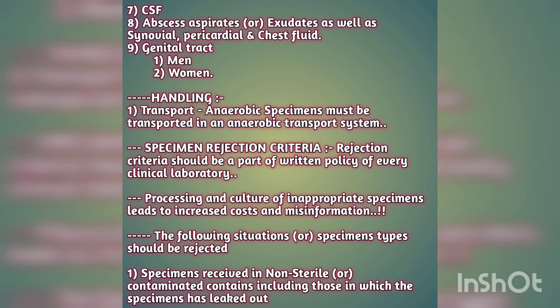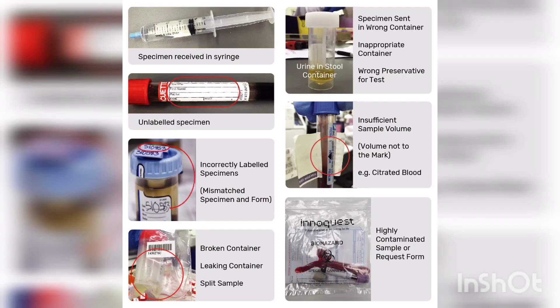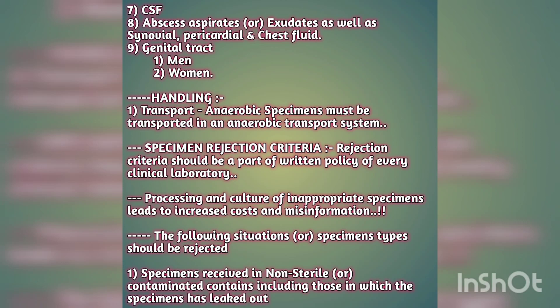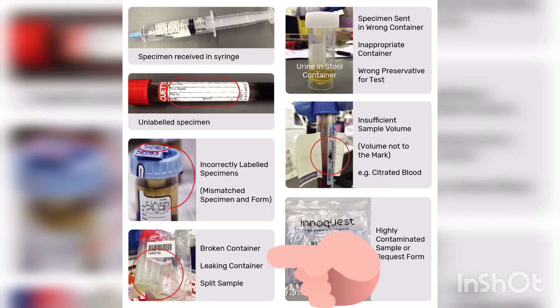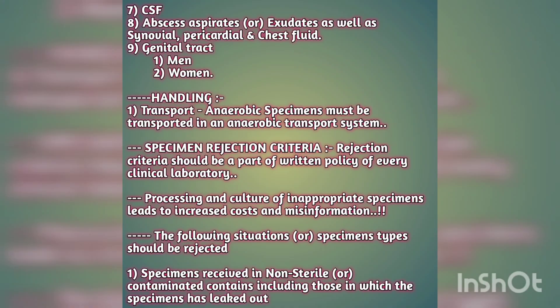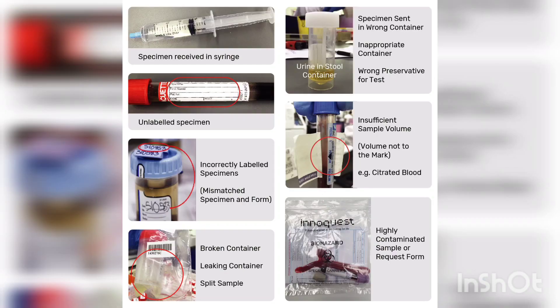Specimen rejection criteria should be part of the written policy of every clinical laboratory. Processing and culturing of an inappropriate specimen leads to increased cost and misinformation. The first rejection criterion is a specimen received in a non-sterile or contaminated container, including those where the specimen has leaked out. Urine or any sample must be received in a sterile container — if received in a non-sterile container, it is grounds for rejection.